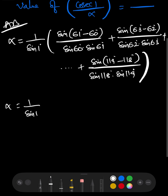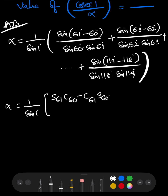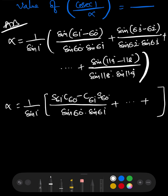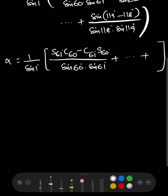Now, keeping the factor 1/sin 1° aside, we apply the identity sin(A − B) = sin A cos B − cos A sin B to expand each numerator, then divide through by the product sin A · sin B in the denominator.